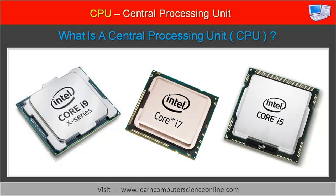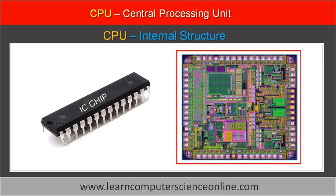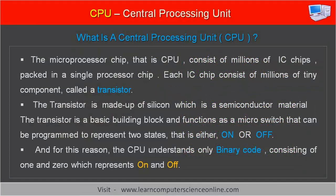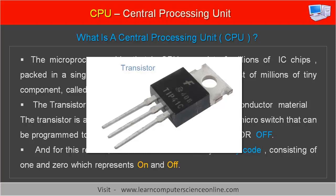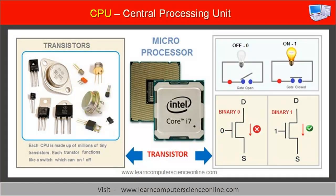Let us now discuss the internal structure of the CPU. A processor is basically an integrated circuit chip. The microprocessor chip, that is the CPU, consists of millions of IC chips packed in a single processor chip. Each IC chip consists of millions of tiny components called a transistor. The transistor is made up of silicon, which is a semiconductor material.